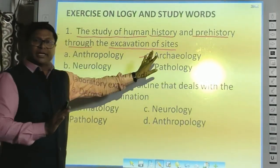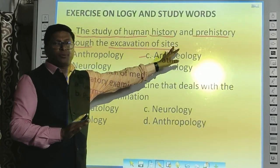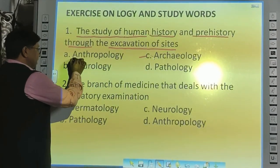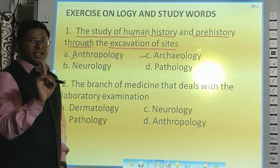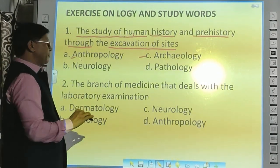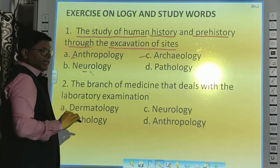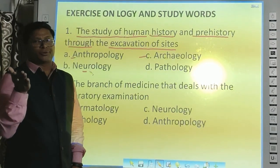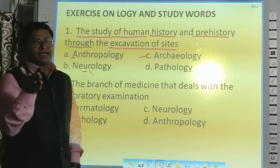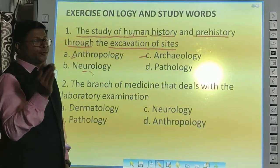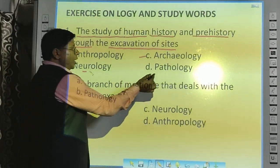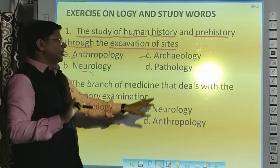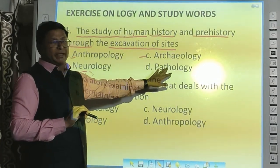Archaeology means Pura Tattwa Vigyana. Let's revise the other words too. Anthropology — when you study humankind, that is Anthropology. Neurology — the study related to nerves or nervous system disorders, their anatomy and functions — that is Neurology. And Pathology — the branch of medicine where laboratory examinations are done, that is Pathology.